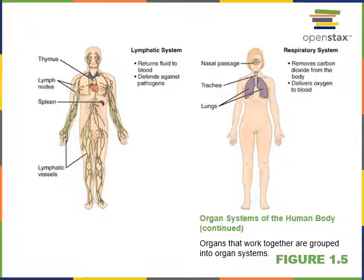The lymphatic and immune system includes lymphatic vessels, lymph nodes, spleen, and thymus. Its functions are to drain fluid from peripheral tissues back into veins and to defend the body against pathogenic organisms like bacteria or viruses. The respiratory system includes the lungs, bronchi, trachea, larynx, pharynx, nasal cavities, and sinuses. Its functions are to bring air in and out of the body, enabling external respiration where oxygen is transferred into the blood and carbon dioxide is removed.